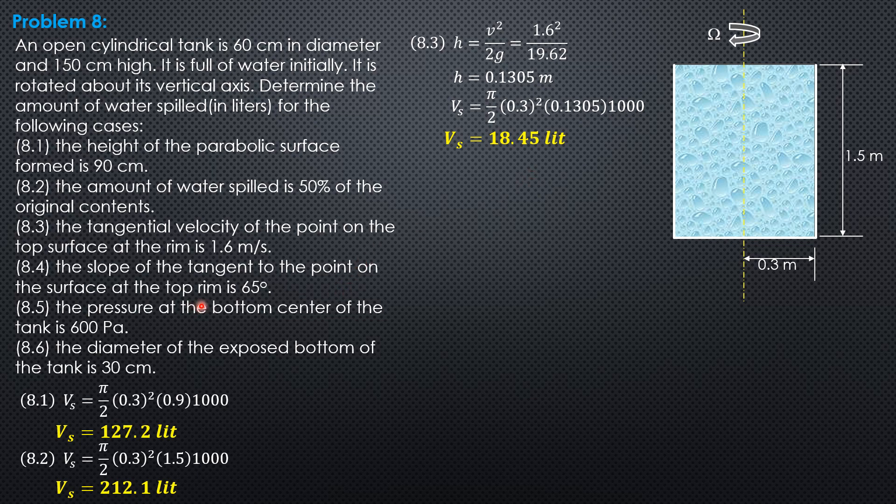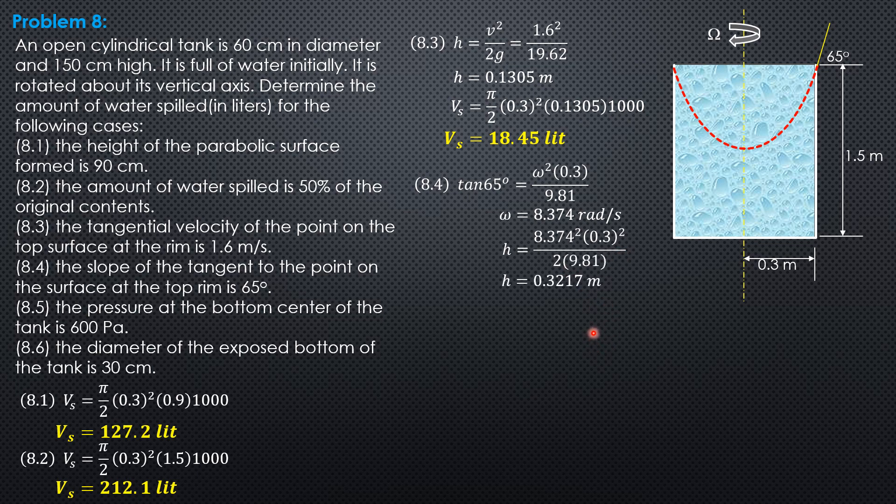Then next, the slope of the tangent to the point on the surface at the top rim is 65 degrees. Slope tangent theta equals omega squared x over g. That's the direct formula where omega is in radians per second. So let's compute omega first in radians per second. So tangent 65 equals omega squared times 0.3 over 9.81. So omega is 8.374 radians per second. And the height in terms of omega is omega squared r squared over 2g. So 8.374 squared times 0.3 squared over 2 times 9.81. So the height is 0.3217 meters.